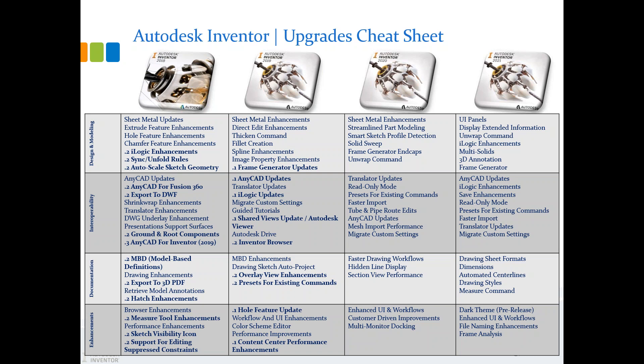2018 had iLogic enhancements, model-based definition enhancements to support assemblies and 3D PDFs, and exporting to 3D PDFs from the Inventor model. 2019 had the new hole panel instead of the traditional dialog box. 2020 had more standard part modeling features moved to panel UIs. And 2021 has more of those moving over, a measure command update for drawings, AnyCAD updates to support Revit models, multi-solid window selection, the dark theme back, and more.